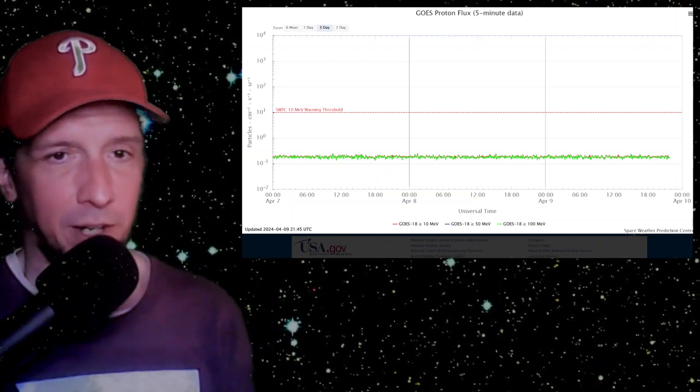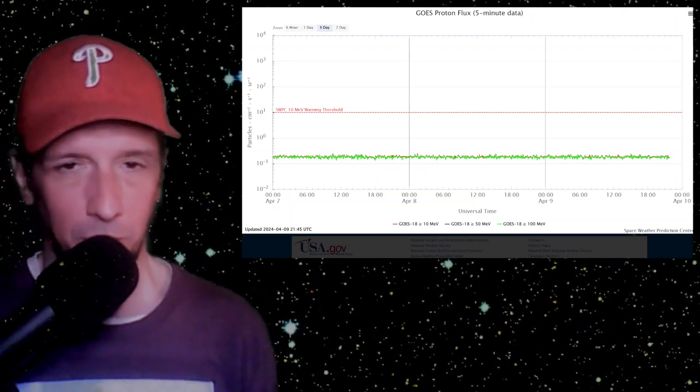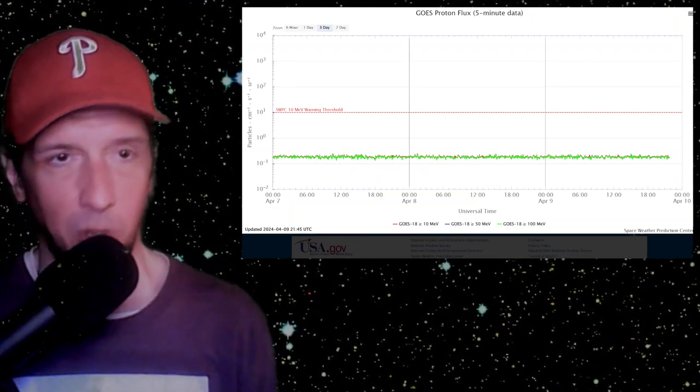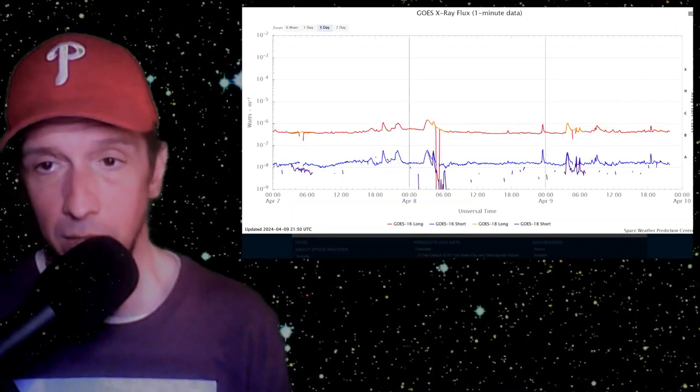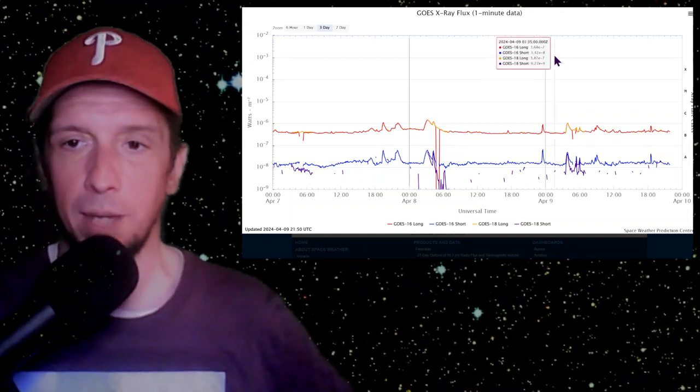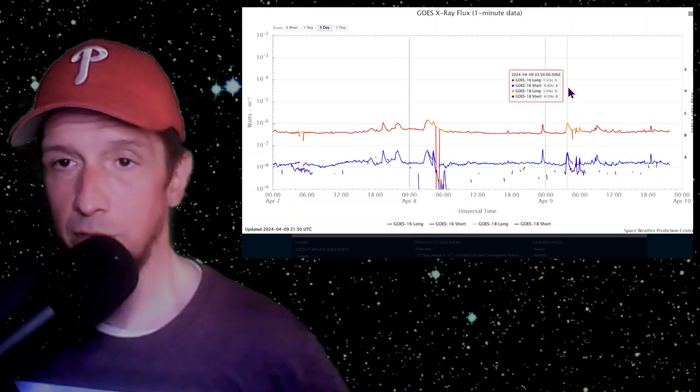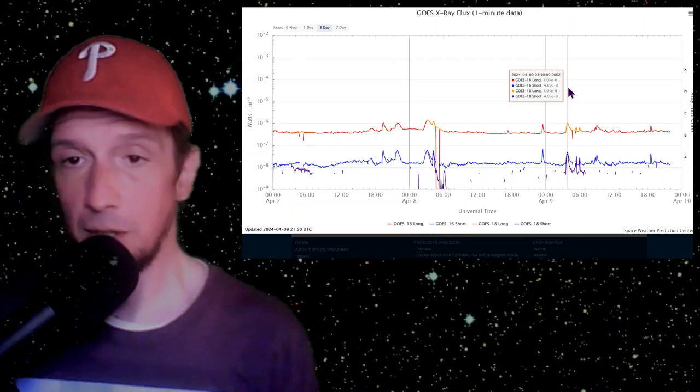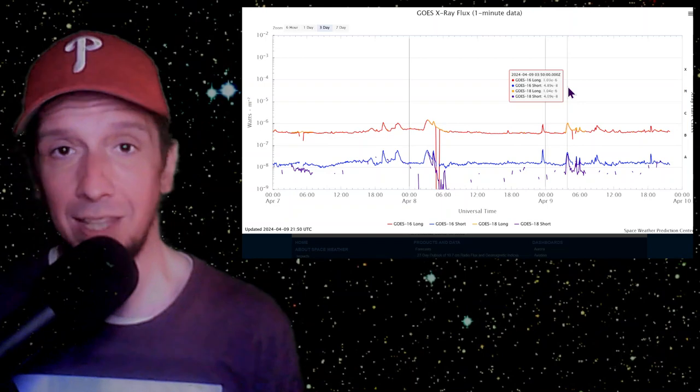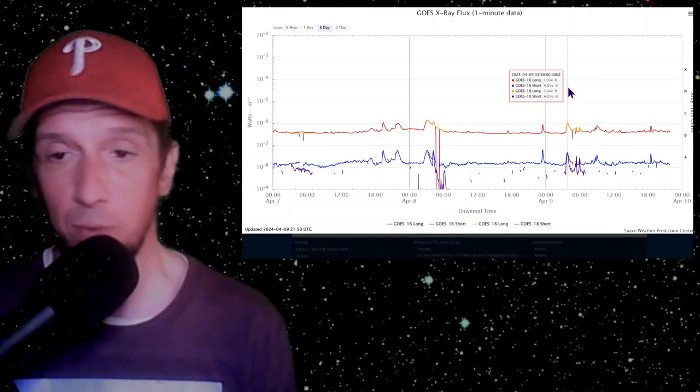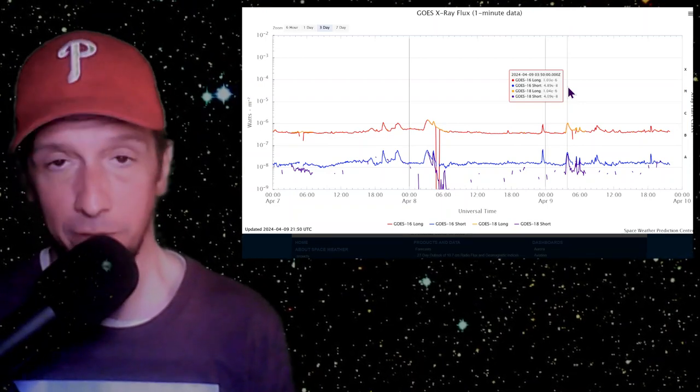Energetic particles and flares are very low. GOES proton flux there, no events in quite a while, and no major flares either. Only a barely C-class intensification there. A C1 solar flare is the most significant increase in the X-ray flux density that we've seen for the past 24 hours.